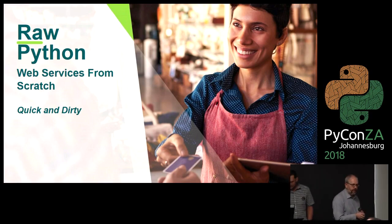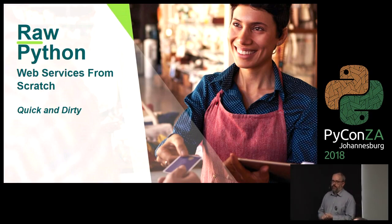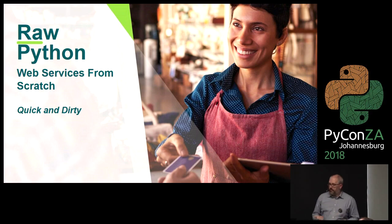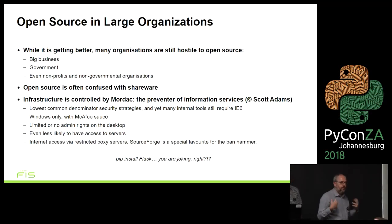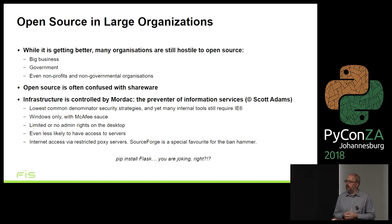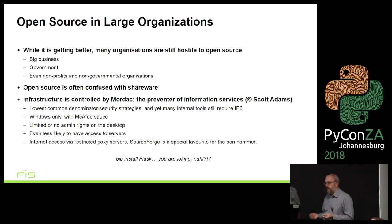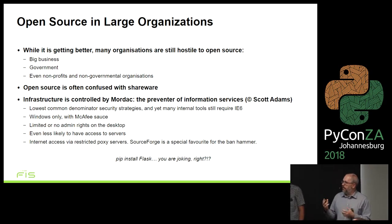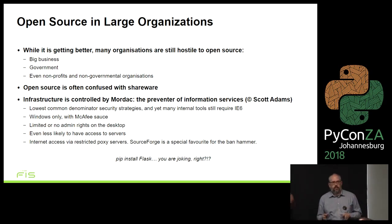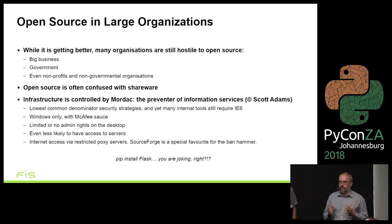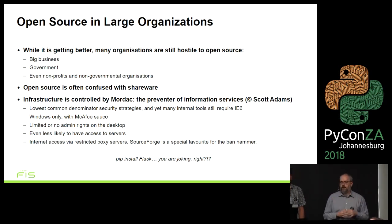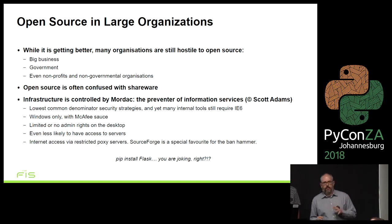I'll be talking about the second approach - the harder approach: building a web service from scratch. You don't have Flask, you don't have Django, you don't have access to anything. Why does this happen? To understand this you first need to understand the nature of open source and the nature of large organizations. In large organizations, open source is still something they don't really get to grips with - though it's getting much better.